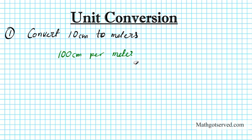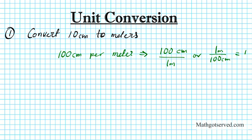What does this mean? Well, this means that either you have 100 centimeters over 1 meter, or 1 meter over 100 centimeters. You see, these two conversion factors are equal to 1. So when you want to convert from meters to centimeters, one of these two options is the one you're going to use. When you multiply by these two conversion factors, you do not change the problem because they are both 1. 100 centimeters and 1 meter are the same magnitude.